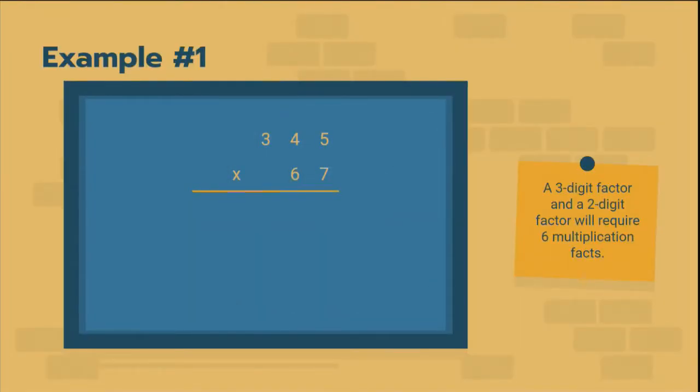So here's our first example. Now we need to remember that a three-digit factor, 345, and a two-digit factor, 67, will require six multiplication facts.